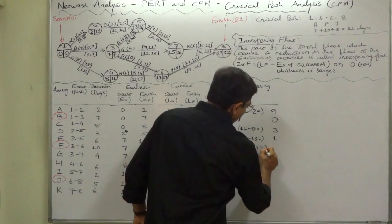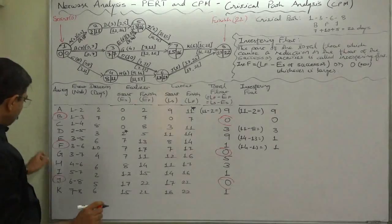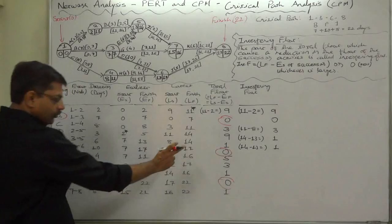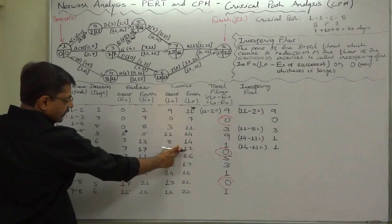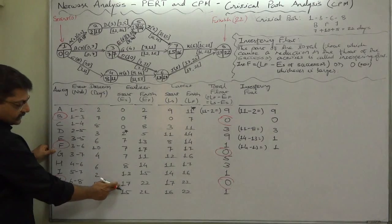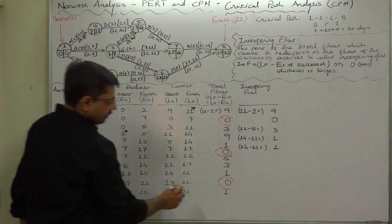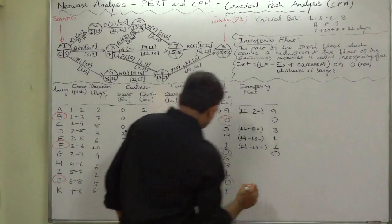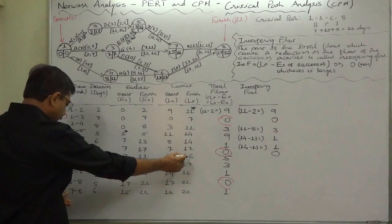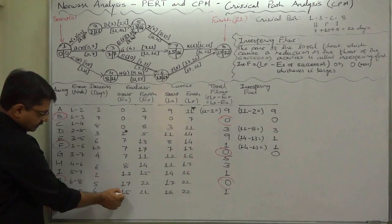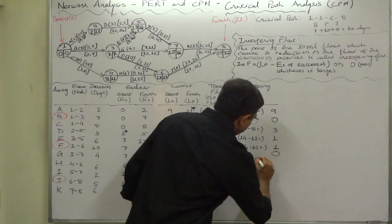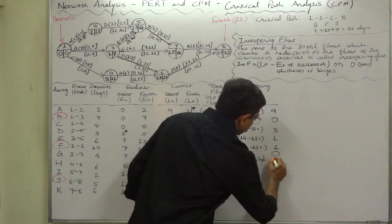Now F: it will be 0. You can check - latest finish time of F is 17, its successor is J, earliest start time is 17, so 17 minus 17 is 0. G: latest finish time is 16, its successor is K, K's earliest start time is 15, so 16 minus 15 equals 1.